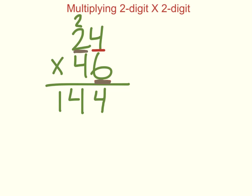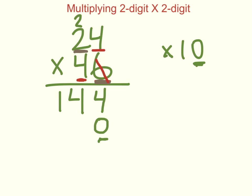Now I am done with the ones place value. I'm moving over to the tens place value. What I'm going to do in the numbers below is put a zero in the ones place, because now we're working with tens, and anything times ten always has one zero.